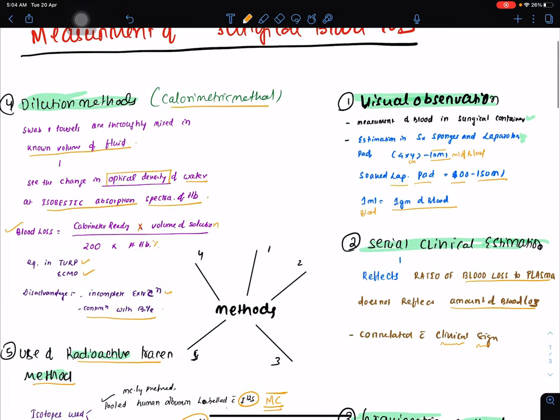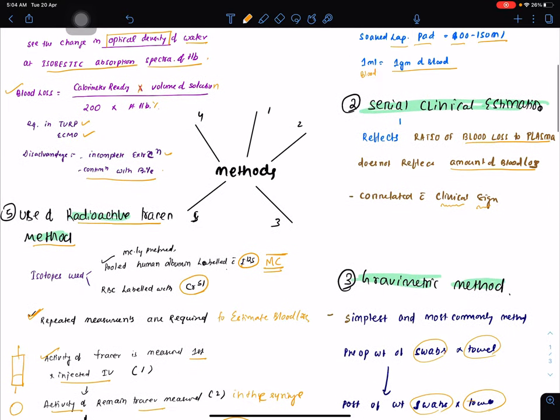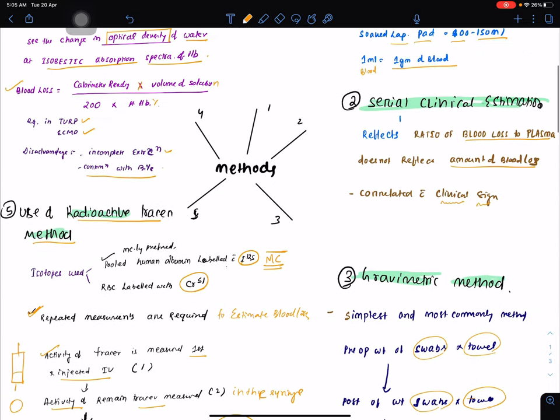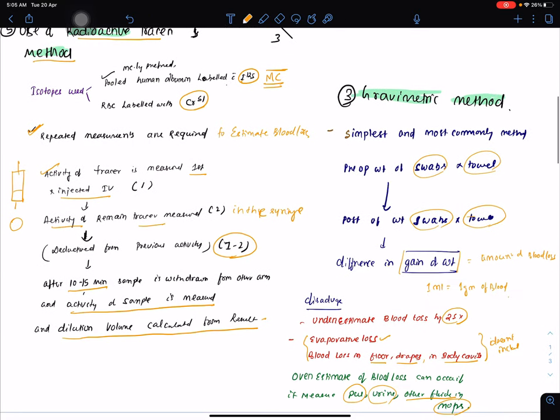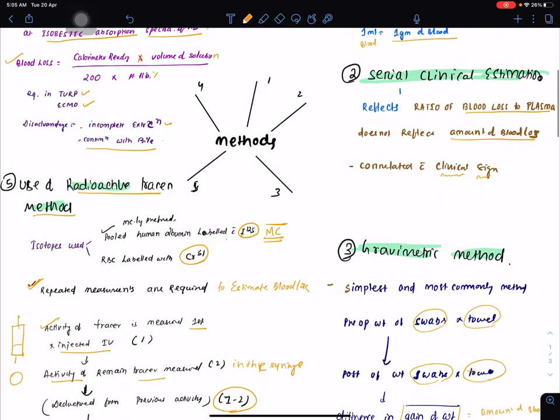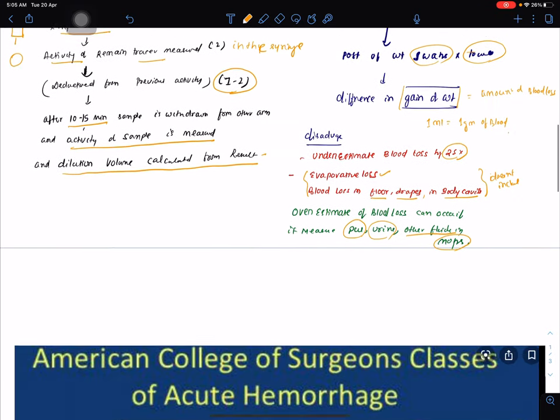These are the five methods: one is visual observation, second is serial clinical estimation of CBC, gravimetric method, calorimetric method, and use of radioactive tracer methods.